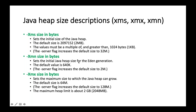XMN is for the young generation — also called the hidden generation — where exactly the Java objects are getting created. From the young generation, through the survivor spaces S0 and S1, objects will be moved to the old generation. There's a space called young/hidden generation inside the Java heap. The default size is also 64. Generally we don't use XMN much — most of the time we will be using the initial size and the maximum size.